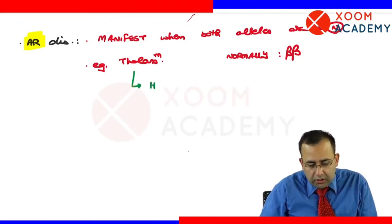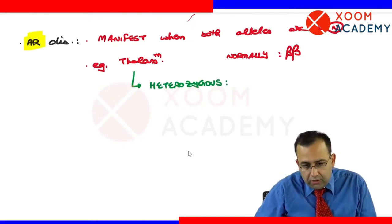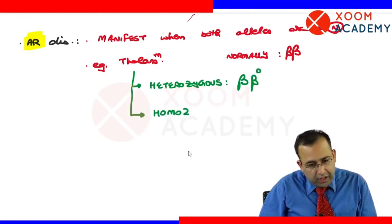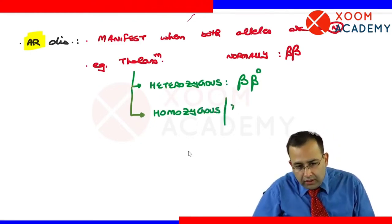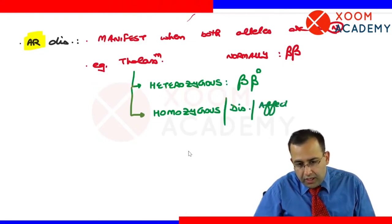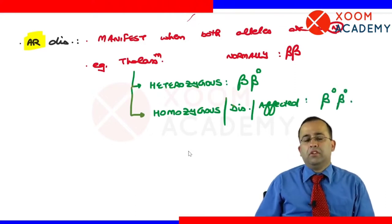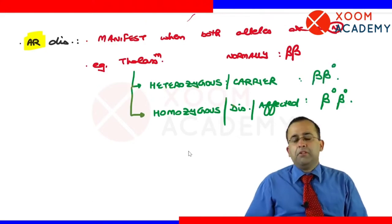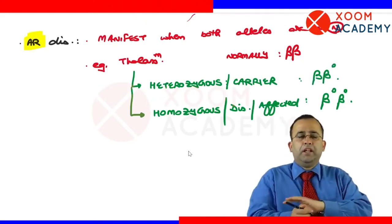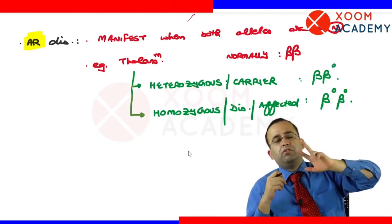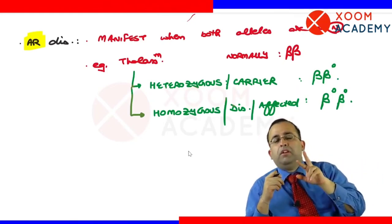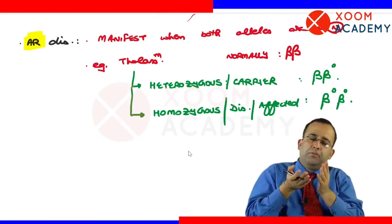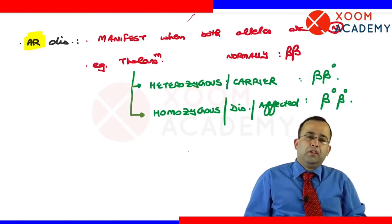In autosomal recessive diseases, either the person is heterozygous — one allele is normal and the other is abnormal (beta/beta-zero) — which is called the carrier state. Or the person is homozygous — both alleles are abnormal (beta-zero/beta-zero) — which is called the diseased or affected state. Heterozygous is the carrier; homozygous is the diseased state.